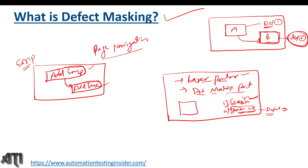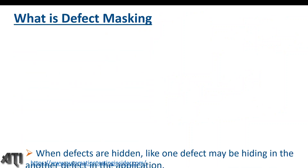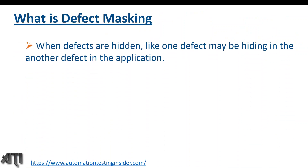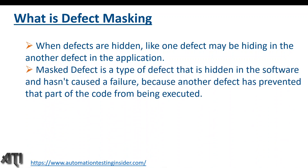Those are different examples of defect masking. To recap: when one defect is hidden by another defect in the application, that is called defect masking. A mask defect is a type of defect that is hidden in the software.